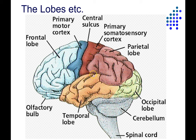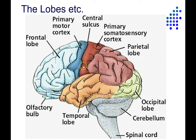The parietal lobe has multiple representations of space housed within it, using different coordinate systems — representations in terms of arm movements, eye movements, and so forth. It's important for integrating what we see with what we do — integrating vision and action. The primary somatosensory cortex here is important for touch; it's the first part of cortex that starts processing touch information coming from different parts of the body.